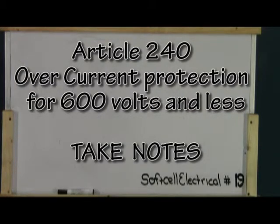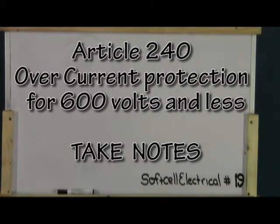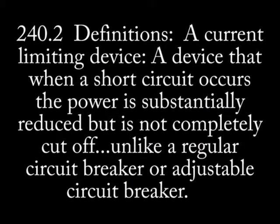Article 240 takes us into overcurrent protection for 600 volts or less. This article takes us through most of the code book. Let's start with article 240.2 definitions: current limiting overcurrent device. To simplify it, it's just a breaker that reduces the current when you have a short circuit. It maintains a substantially lower current rather than completely breaking the circuit. This type of device is rarely used, but you should know what it is.